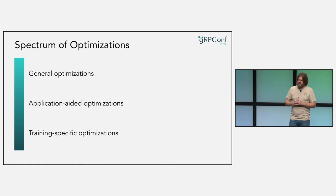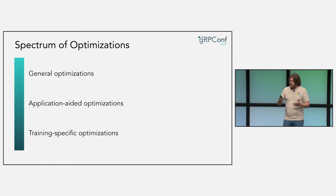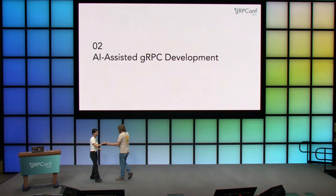We also get some training-specific optimizations. For training and dealing with the DMA issue, we can use a different transport completely — one where we don't need to worry as much about stability requirements. That is less likely to benefit the majority of people; most people aren't doing DMA or interacting with hardware at that level. With that in mind, let's continue and talk about using AI to develop with gRPC.